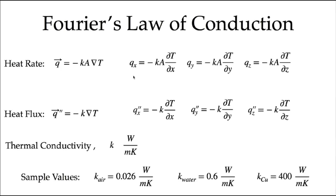In a Cartesian system, we can look at the x-component of the heat transfer, where the gradient is dT/dx. In the y-direction, we have a component of the heat flux vector equal to the conductivity times the area, acting against the temperature gradient dT/dy. Likewise in z, we have the conductivity times the area times the temperature gradient dT/dz. If we express it as a heat flux by dividing by area, it becomes minus k times the temperature gradient, giving components q'' x, q'' y, and q'' z.